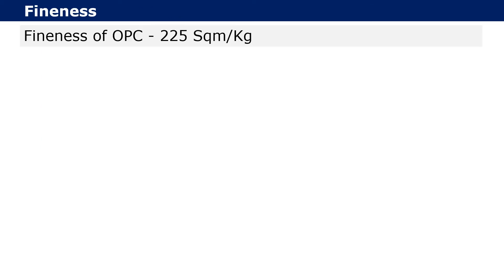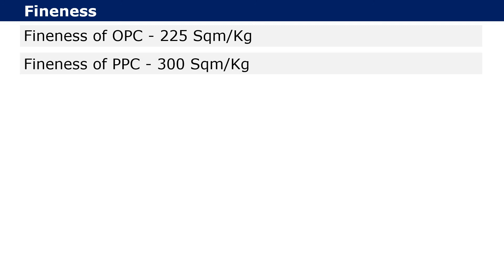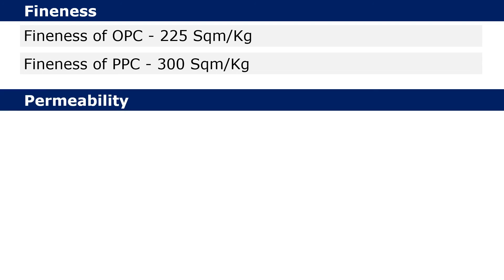Fineness: the fineness of OPC is at least 225 square meters per kilogram, whereas the fineness of PPC is 300 square meters per kilogram, which is higher than OPC. We can clearly see that the fineness of PPC is more than OPC, which leads to the next topic of permeability.